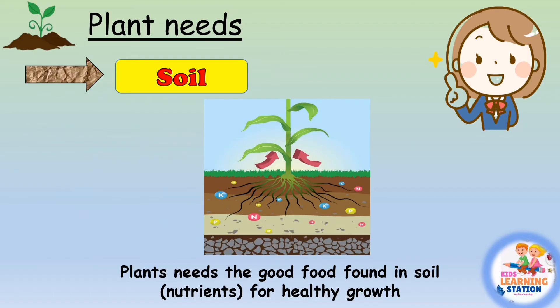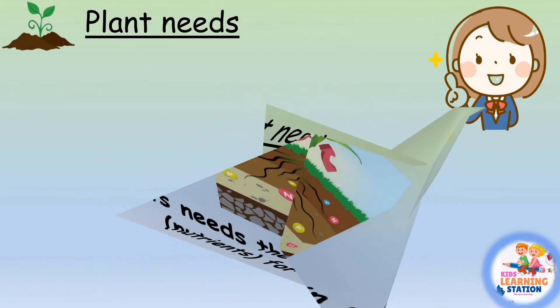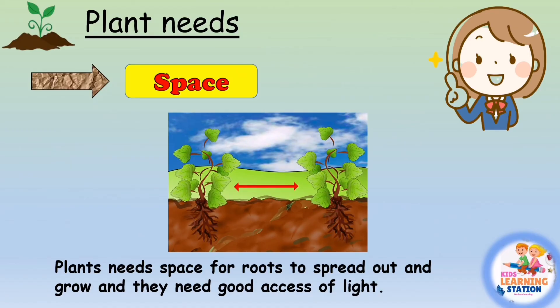Soil: soil is very important for the healthy growth of a plant. Plants need the good nutrients found in the soil, such as potassium and nitrogen. Soil provides these nutrients to support plant growth.